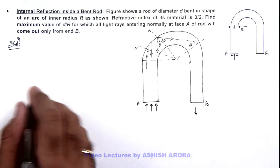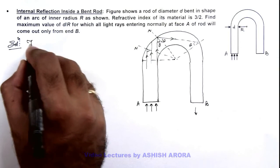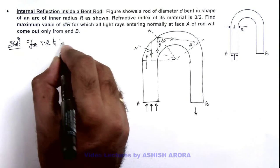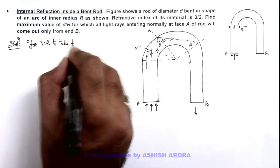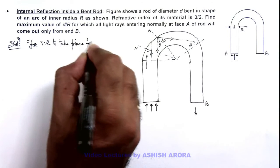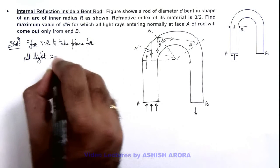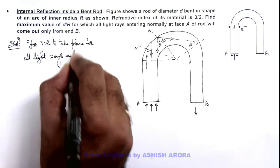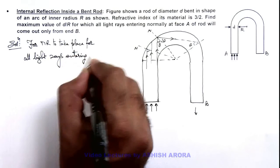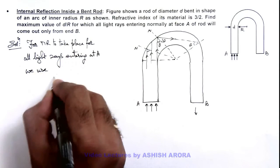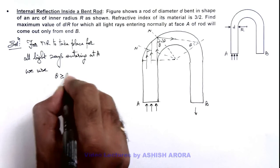So here we can say, for total internal reflection to take place for all light rays entering at A, we use theta should be greater than or equal to critical angle.